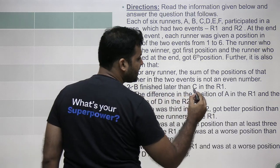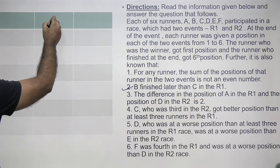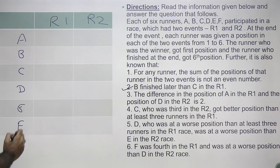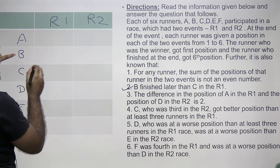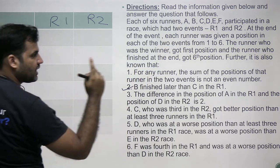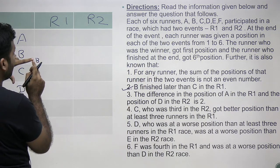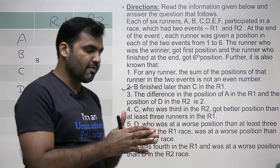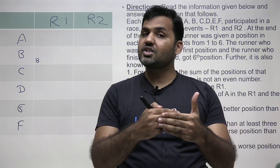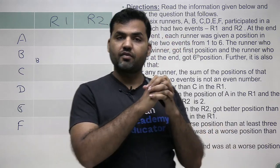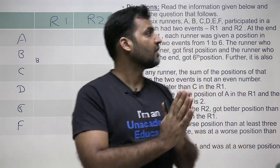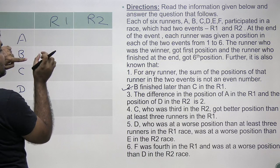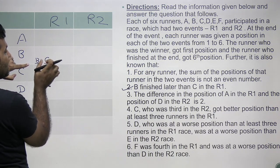The second statement says B finished later than C in Race 1. So if B is finishing later than C, the rank of B will be higher in magnitude than C's rank. The person who wins is ranked 1, so a higher numerical rank means finishing later. B is finishing after C, so C's rank must be lower in magnitude than B's rank in R1.